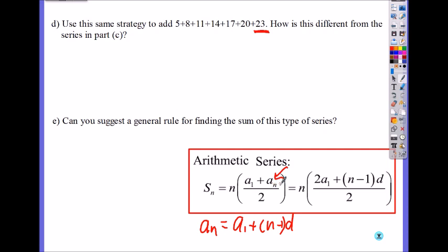Let's try D. Use this same strategy to add 5, 8, 11, 14, 17, 20, plus 23. I mean, if there is only 1, 2, 3, 4, 5, 6, 7 terms, you can just plug it into the calculator and add it. But let's see if the formula works.